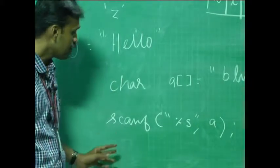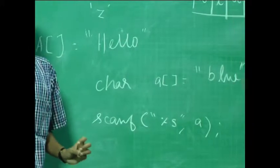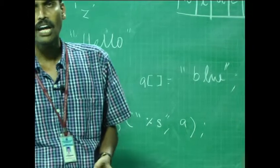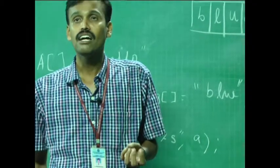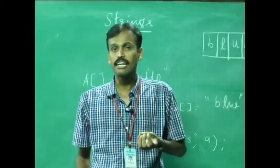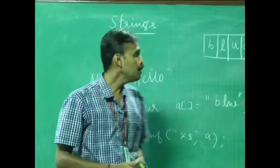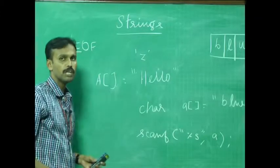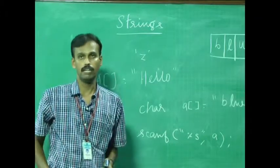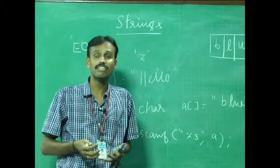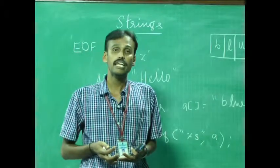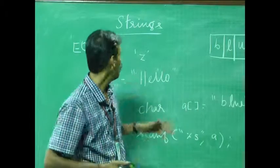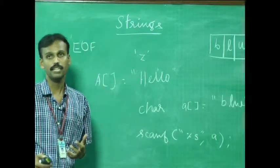Every string has a delimiter in the sense of a null character, or a function receives a character or EOF — that is, end of file — as an argument. EOF stands for end of file. Each function receives a character or an EOF as a single argument to know that the particular string has terminated.